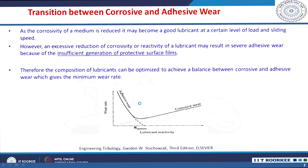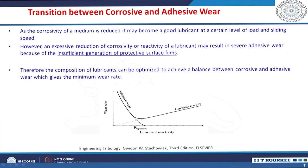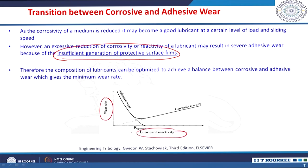There is always a transition between corrosive and adhesive wear. As the corrosivity of the medium is reduced, it may become a good lubricant at a certain level of loading and sliding speed. However, excessive reduction of the corrosivity or reactivity of a lubricant may result in severe adhesive wear, because of insufficient generation of protective surface films. Looking at wear rate versus lubricant reactivity, there is a certain reactivity optimum where both adhesive and corrosive wear are at minimum levels. The composition of lubricant has to be optimized to achieve this balance.